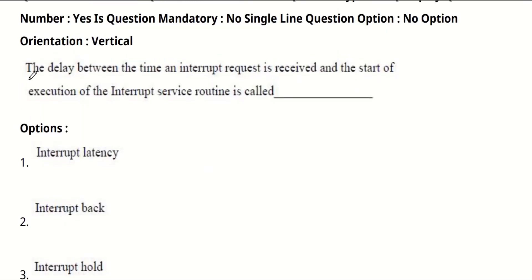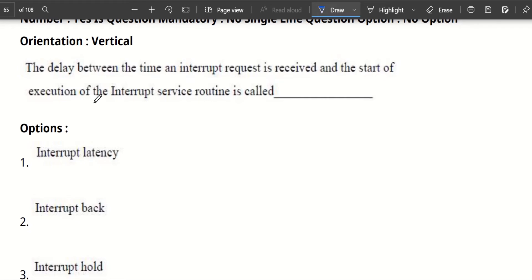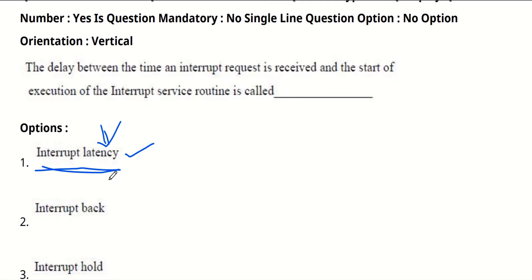The delay between the time an interrupt request is received and the start of execution of the interrupt service routine is called. Here we are having some delay between interrupt request and its service. This difference is known as interrupt latency. The option is interrupt latency. Latency means delay. Delay in anything is known as latency. An interrupt is one of the most important concepts in ECET. It will get back in every subject you have, so be perfect with interrupts. Now let's move to our next question.